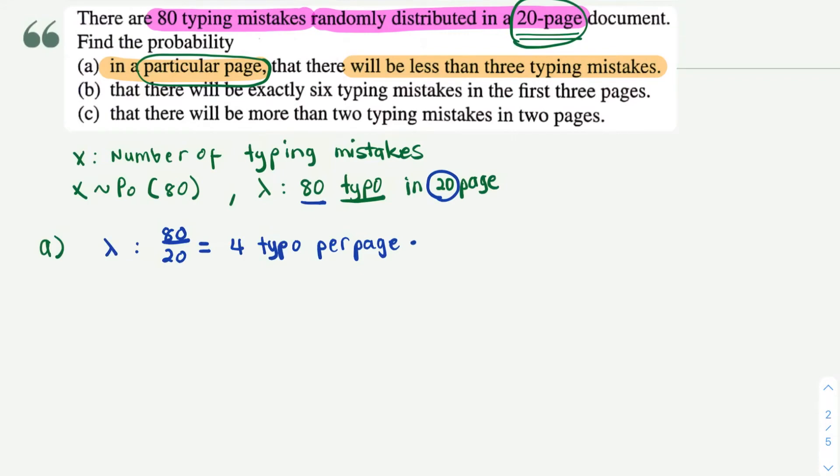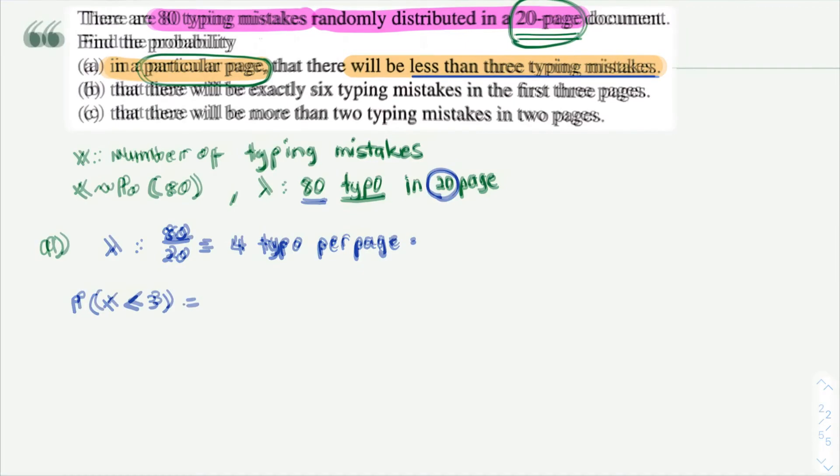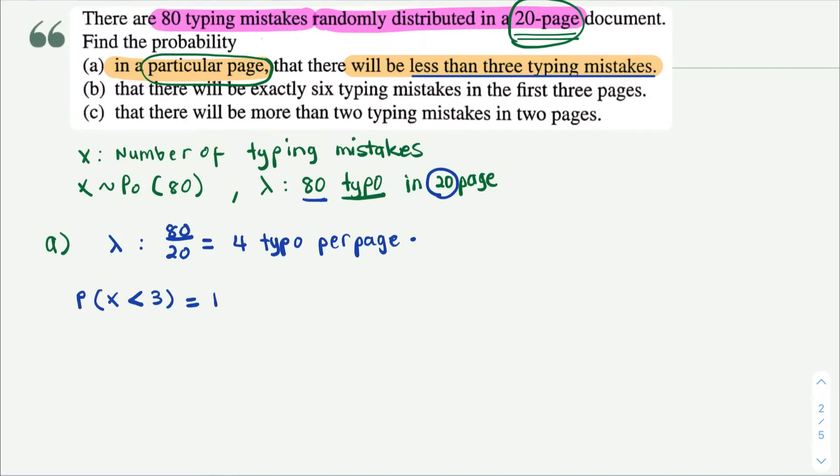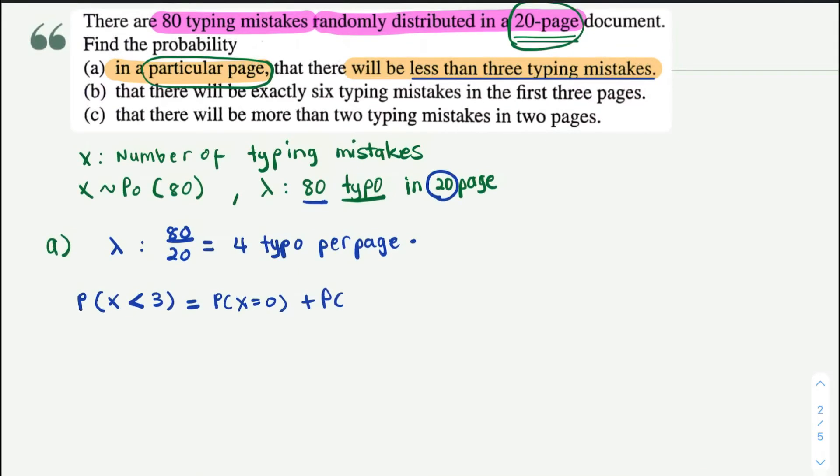Okay, that's how simple you can change the lambda. Now back to the question, they actually ask you about there will be less than three typing mistakes. So that means they're asking for P(X < 3), number of typing mistakes less than three. Less than means you have to sum up from P(X = 0) plus P(X = 1) plus P(X = 2).